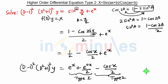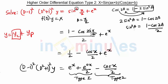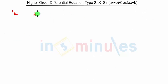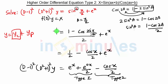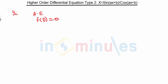The solution is y = yc + yp. First we find yc, which remains the same. For yc we consider an auxiliary equation: f(D) = 0. In our case, f(D) = (D − 1)² · (D² + 1)².